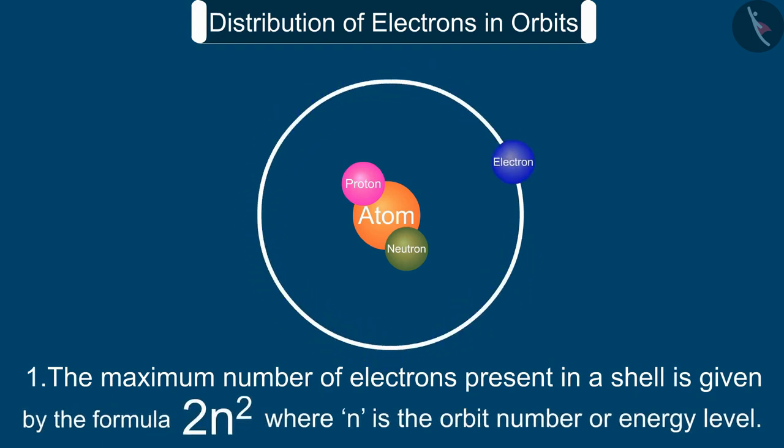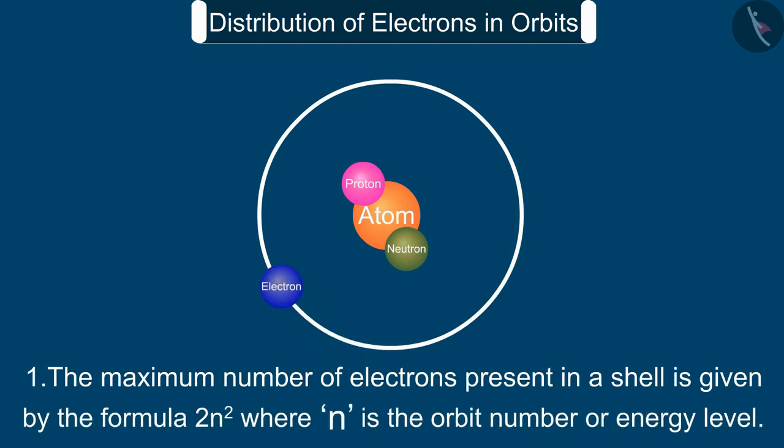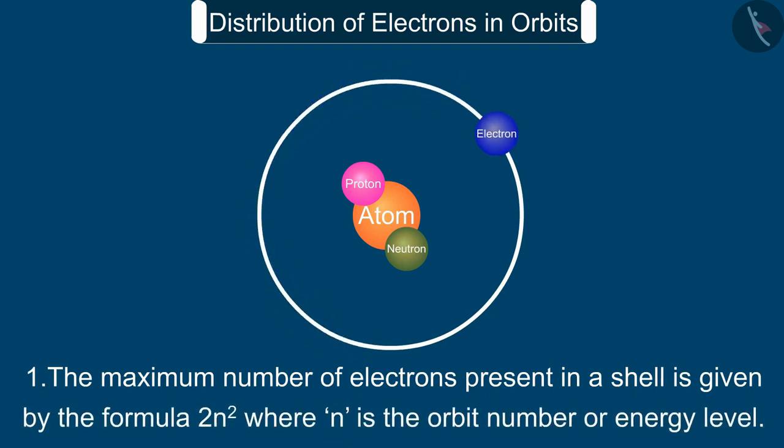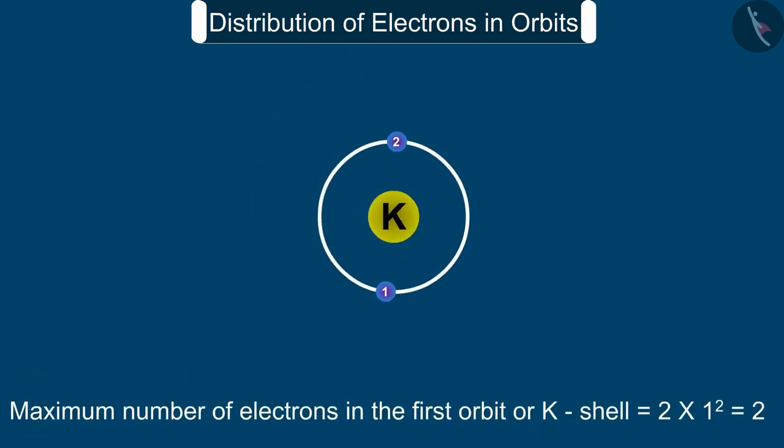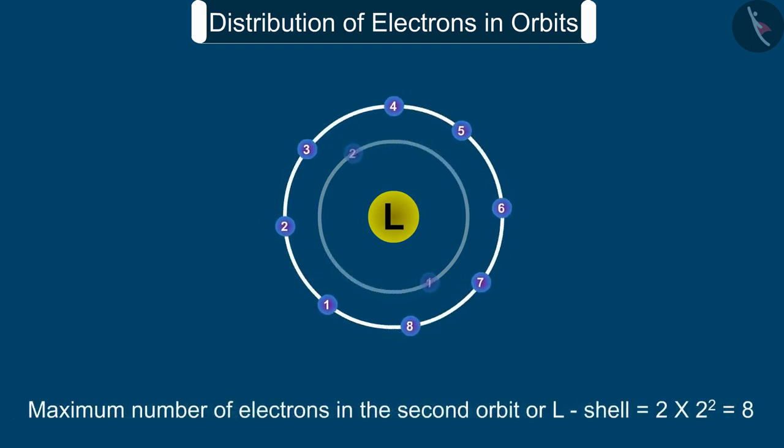Therefore the maximum number of electrons in the first orbit or K shell is equal to 2 into 1 square, that is 2. In the second orbit or L shell is equal to 2 into 2 square, that is 8.